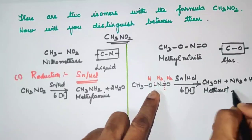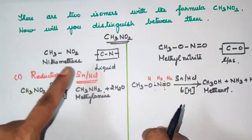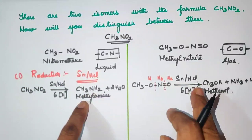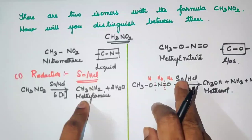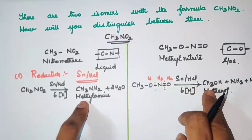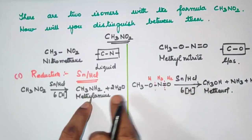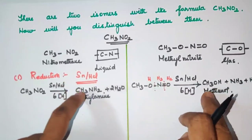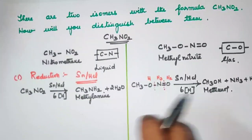This is the main difference: when nitromethane is treated with tin and HCl, it forms methylamine (CH₃NH₂). Whereas when methyl nitrite is treated with tin and HCl and reduction is carried out, methanol will form. So there is a difference in products, and we can differentiate these two compounds this way.